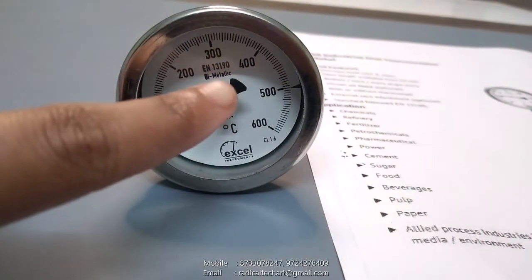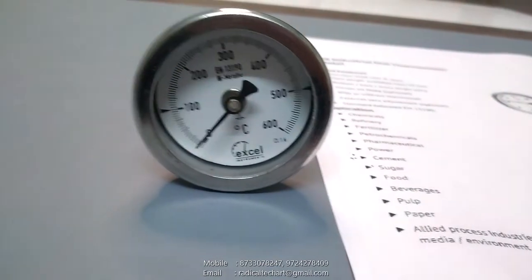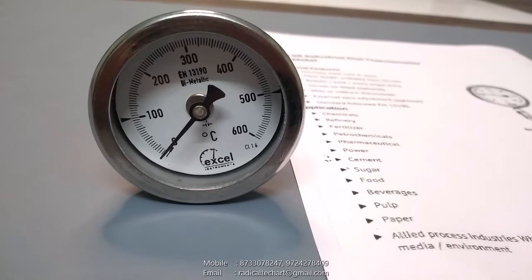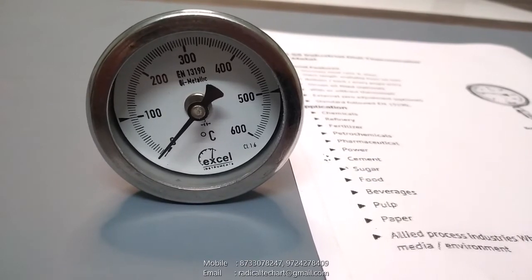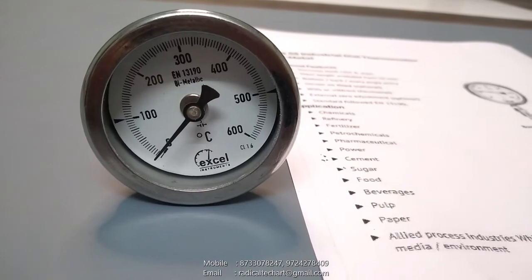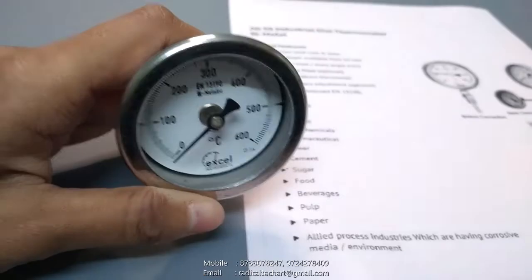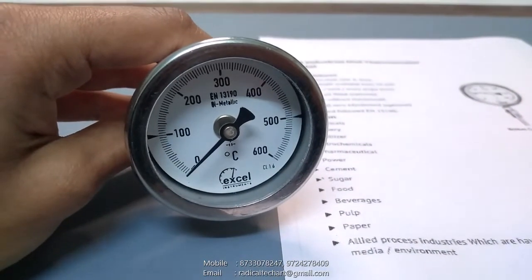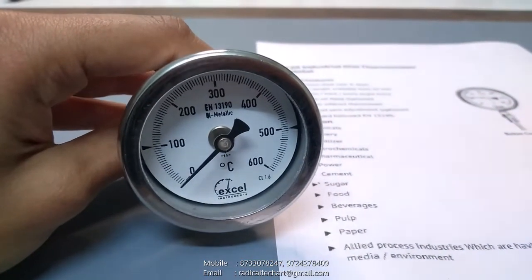Also optional extras are available with liquid field which are silicon or dielectric oil, dual scale degrees available with centigrade or Fahrenheit. For this particular model we will talk about its features. Range is 0 to 600, you can see here 0 to 600 centigrade, its dial size is 50mm.